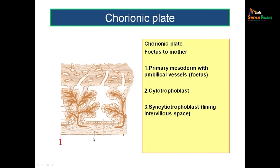In this cut section of the placenta, you can see the chorionic plate on the fetal side and the basal plate on the maternal side. Looking from fetus toward mother, you first see the primary mesoderm with umbilical blood vessels, then one single layer of cytotrophoblast, and outer to it the syncytiotrophoblast, which lines the intervillus space between adjacent villi.